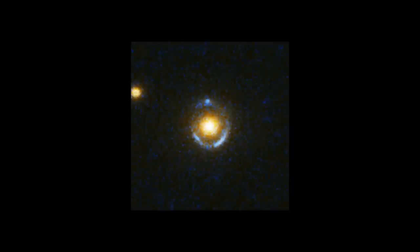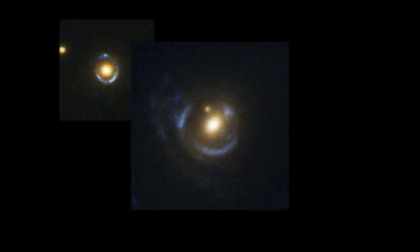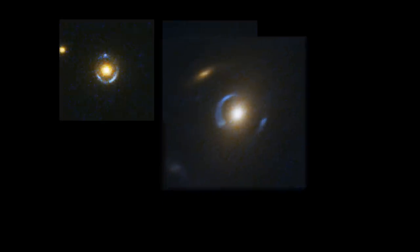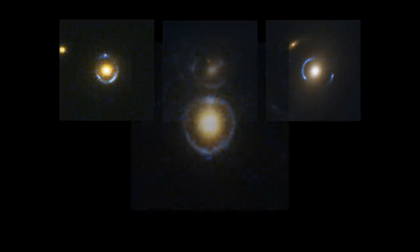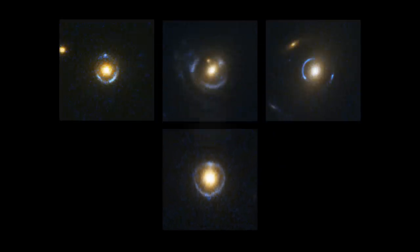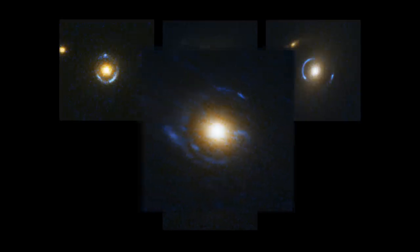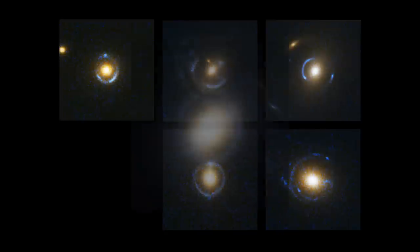Or, if everything is perfectly aligned, we see a ring of light encircling the huge galaxy in the foreground. These perfect rings, known as Einstein rings, are so rare that only a few handfuls have ever been observed in visible light.